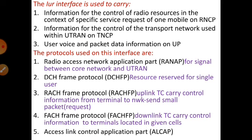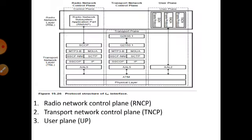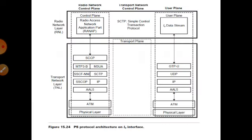In this interface the fifth, sixth, seventh, and eighth protocols are similar to the previous IU interfaces. Sixth is Signaling Connection Control Part, providing extended routing, flow control, connection-oriented services, and segmentation. Seventh protocol is mainly used in the Public Switched Telephone Network. Eighth is SAAL-NNI, which stands for Signaling ATM Adaptation Layer for Network-to-Network Interface — as explained in the previous video.